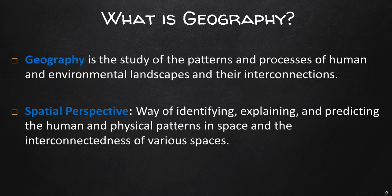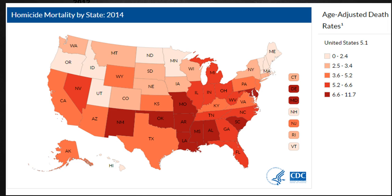Let's look at homicide rate as an example of this spatial perspective. This is a choropleth map depicting the spatial distribution of homicide rates — the rate per 100,000 — in the United States by state. A critical component of a geographer's spatial perspective is the ability to observe data in its spatial form and draw logical conclusions from that data. As a geographer, you might act as a spatial pattern detector. You are probably already doing this — identifying states that have high and low homicide rates.